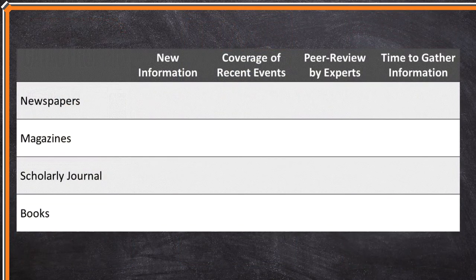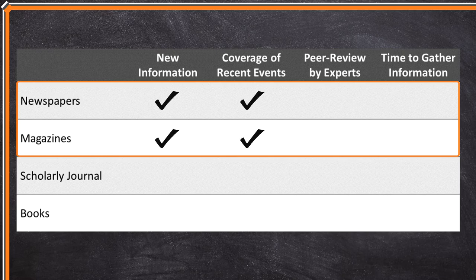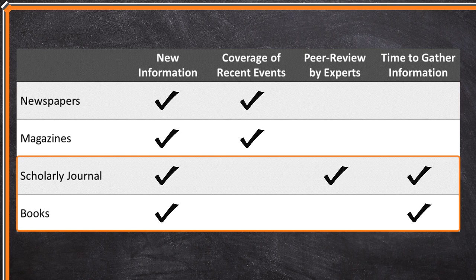It's also useful to think about the limitations and strengths of each publication type. Newspapers, magazines, and television and radio programs publish information quickly, but these writers usually don't have much time to consider the information in depth before their deadlines. Scholarly journal articles and books are not published quickly. However, these writers have much more time to gather information from various sources or experiments. With more time and more information, authors of journal articles and books can offer a rich and multifaceted evaluation of a topic.